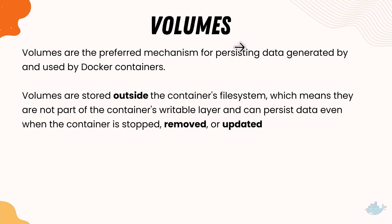In this lecture we'll be talking about Docker volumes. Docker volumes are the preferred mechanism for persisting data generated by and used by Docker containers. Volumes are stored outside the container's file system, which means they are not part of the container's writable layer and can persist data even when the container is stopped, removed, or updated. You can think of a volume like a storage file system outside of the container — you can store data in it and retrieve it even if the container is completely deleted or destroyed.